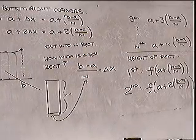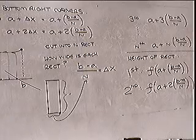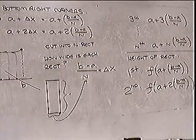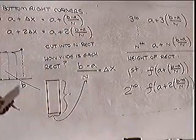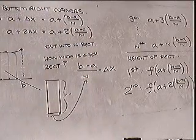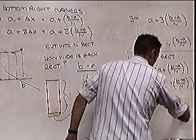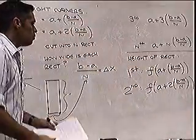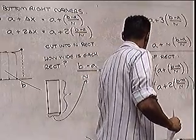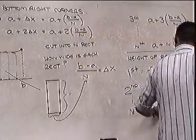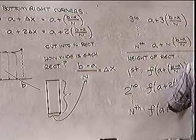And the height of the Nth rectangle is f of A plus N times b minus a over n. A student asks if we can just write 2 delta x since we know what delta x is - yes, we will. You'll see why when we do our first example.